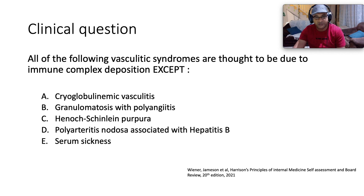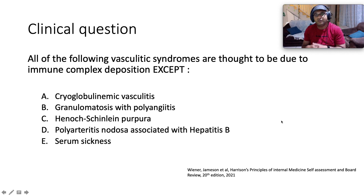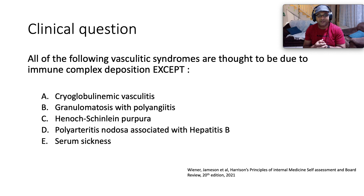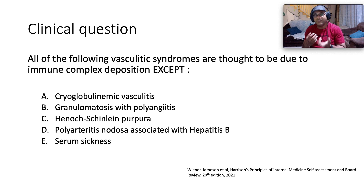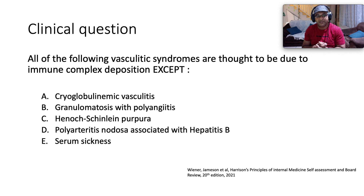Here's our clinical question. All of the following vasculitic syndromes are thought to be due to immune complex deposition with one exception. What is that exception? Is it A. Cryoglobulinemic vasculitis, B. Granulomatosis with polyangiitis, previously termed Wegener's granulomatosis, C. Henoch-Schönlein purpura, D. Polyarteritis nodosa associated with hepatitis B, or E. Serum sickness?